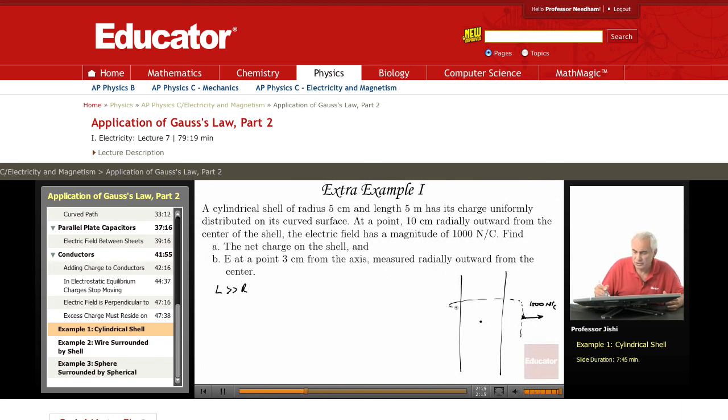You do a Gaussian surface, which is a cylinder of radius r, little r. And height h.